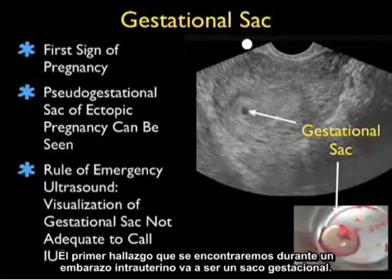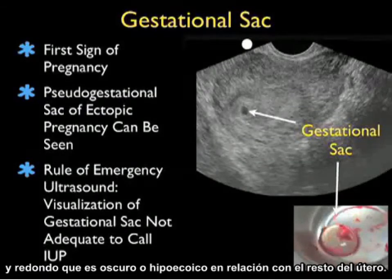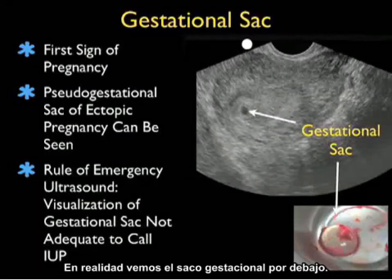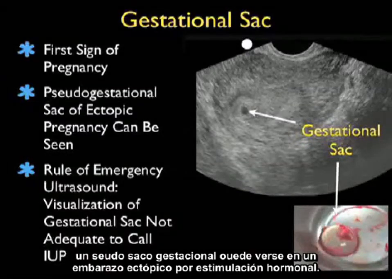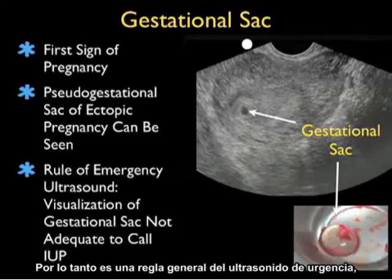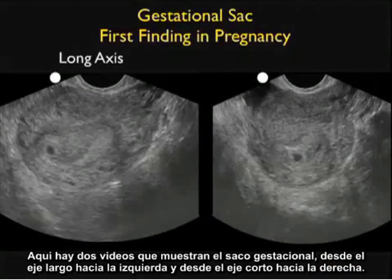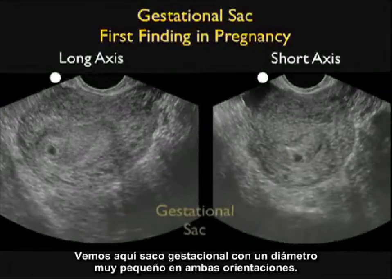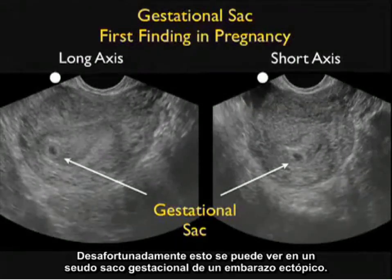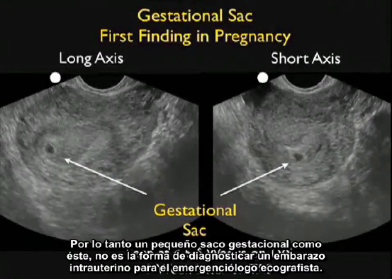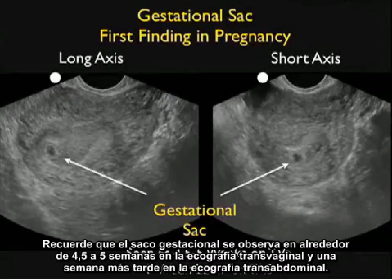The first finding during an intrauterine pregnancy is the gestational sac — a small round circle that is dark or hypoechoic relative to the rest of the uterus. Unfortunately, gestational sac alone is not diagnostic of an intrauterine pregnancy, as a pseudo-gestational sac of ectopic pregnancy can be seen from hormonal stimulation. Here are two video clips showing the gestational sac in long axis and short axis — a very small diameter gestational sac seen in both orientations. A small gestational sac like this is in no way diagnostic of an intrauterine pregnancy for the emergency physician sonographer. The gestational sac is seen at about 4.5 to 5 weeks on transvaginal sonography and about a week later transabdominally.